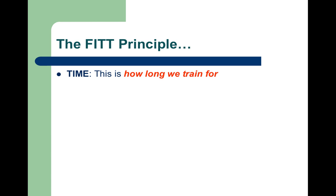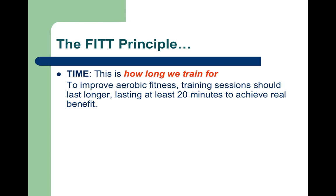The first T in FITT stands for time — how long we train for. To improve aerobic fitness, training sessions should last at least 20 minutes to achieve real benefit. A simple way of showing progressive overload here is to train for 20 minutes, then 25 minutes, then 30 minutes, and keep increasing the duration over time.